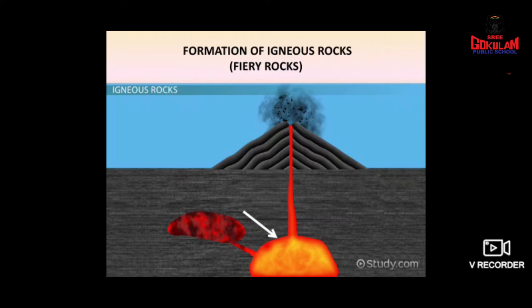These types of rocks are called igneous rocks. When magma gets pushed upward towards the surface of the earth, it will cool down to form solid rocks again. These rocks are known as igneous rocks. Magma from deep inside the earth comes out to the surface. When it cools down, it turns into a hard substance called igneous rock.